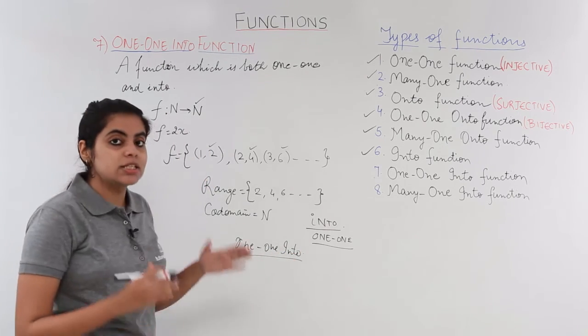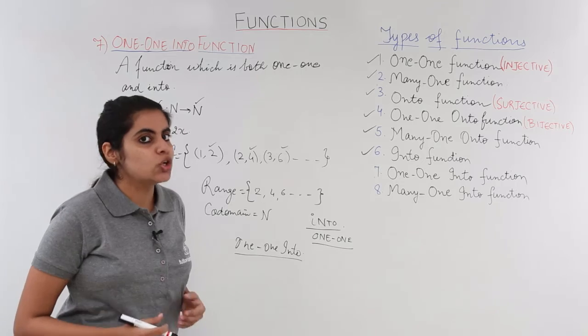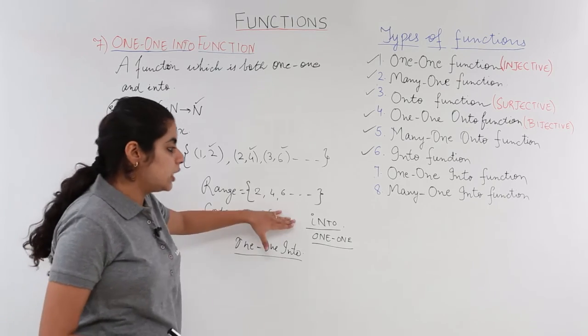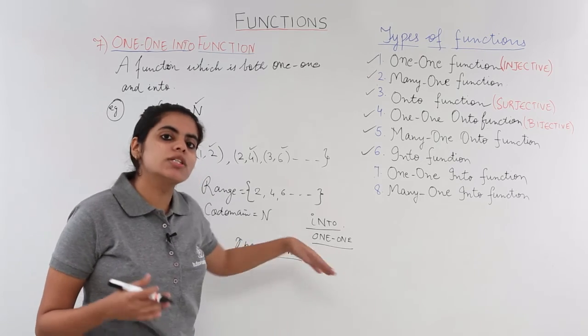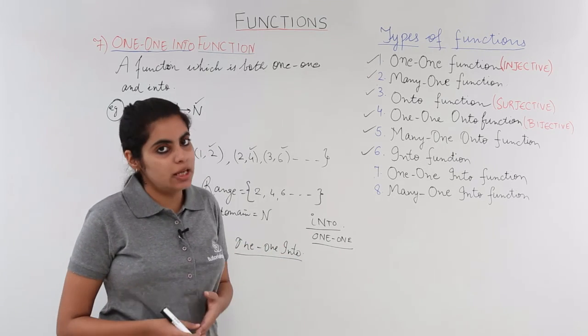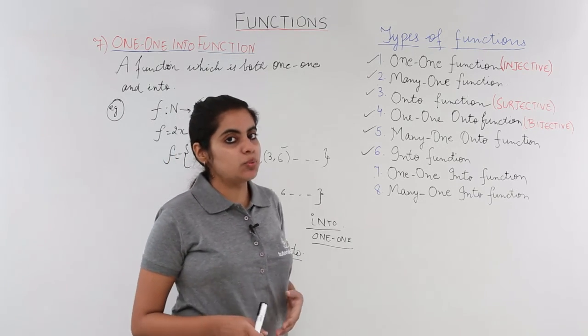Since it is both one-one and into, it is one-one into function—into because range is not equal to codomain, one-one because different elements have different images. So this is about one-one into function.